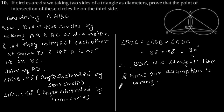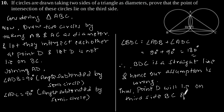So, this point D will lie on the third side, that is BC of triangle ABC. This point will lie on the line BC.